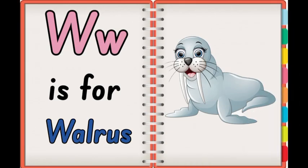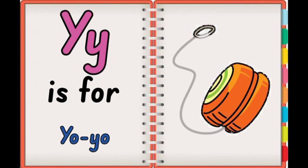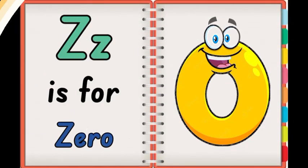W is for Walrus. X is for X-Mas Tree. Y is for Yo-Yo. Z is for Zero.